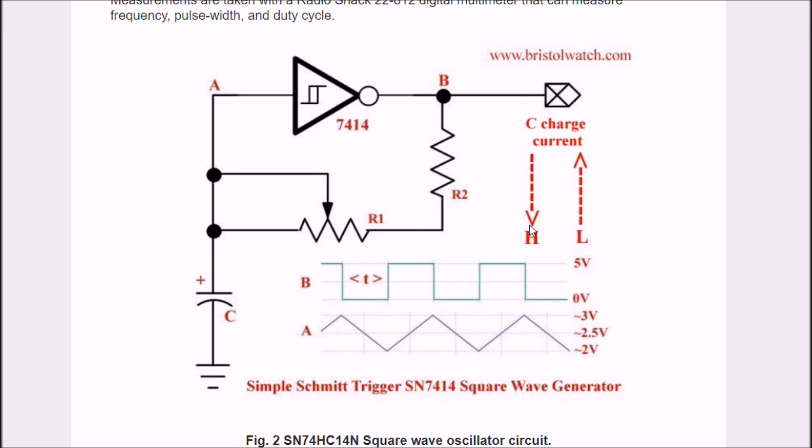It will discharge. It started at 3 volts. It will discharge down to approximately 2 volts. Now the state on B changes. It switches over to high, as shown here. The current path, when B is high, current will begin to charge back up, capacitor C, through R1 and R2.